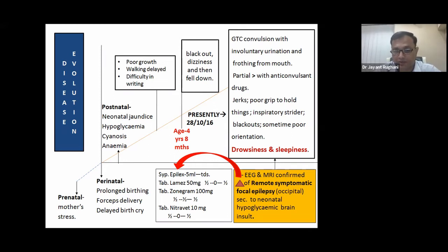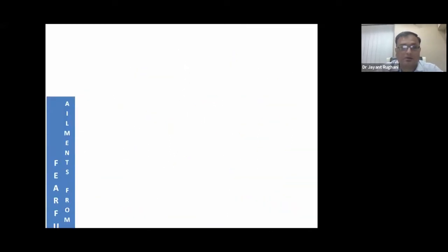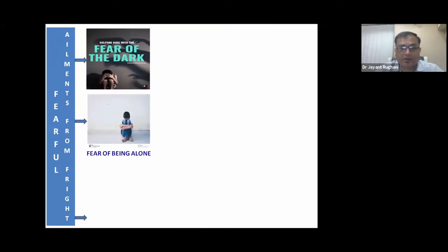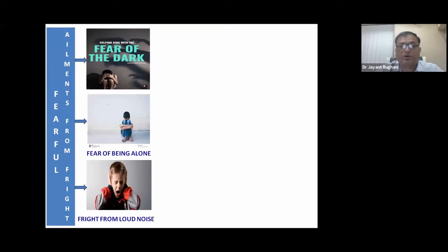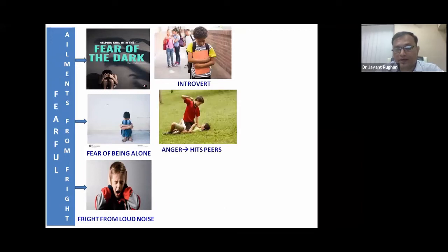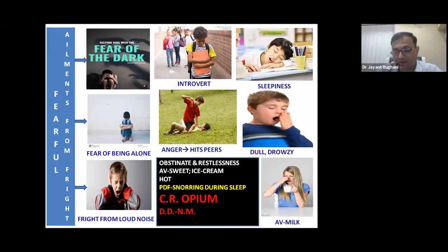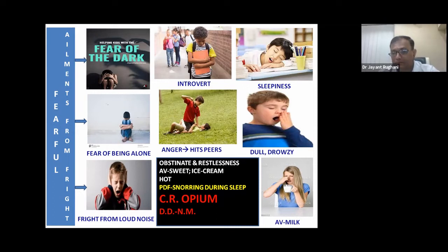Four anti-epileptic drugs were continued: Epilates, Lemase, Zonogram, and Nitrovert. Looking at the person diagnosis: physically the child is fearful — ailments from fright, fear of dark, fear of being alone, and fright from loud noise. He is introvert, very angry, used to hit his peers. There was sleepiness, dullness, drowsiness. He desired milk, was obstinate, restless, desired sweets and ice cream. Thermal state was hot. Parents said the child snores during sleep. So Opium was selected as the constitutional remedy, with Natrum Mur kept in mind as a differential.